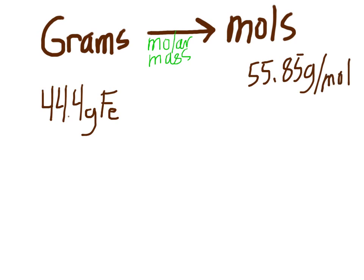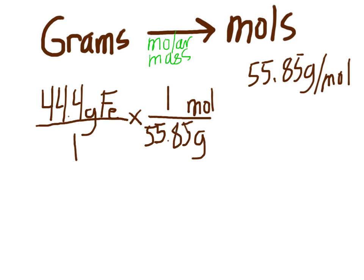So same setup. You throw it over one, multiply it times the conversion factor. Grams is on the top, so we want to put grams on the bottom. So grams and then moles on the top because that's what we want. And then one mole. When we do this conversion factor right here, we only think about everything I'm circling. So in one mole, how many grams are there? And that's 55.85.